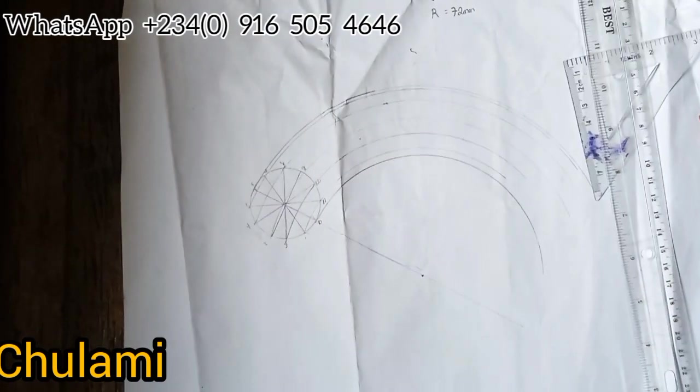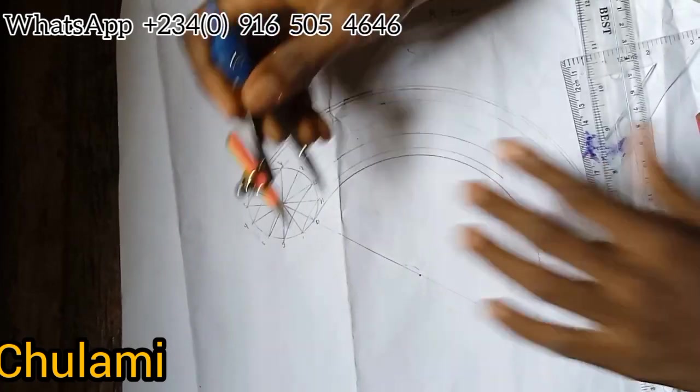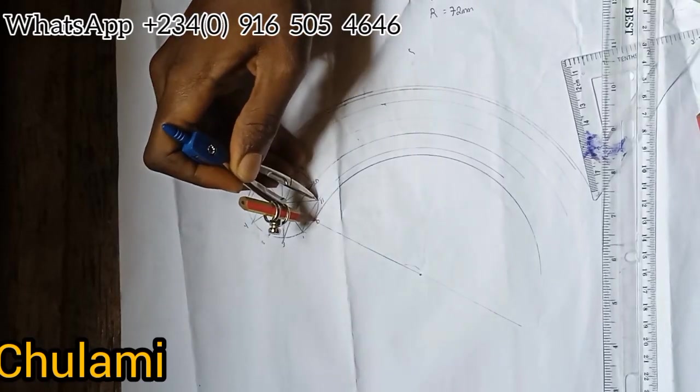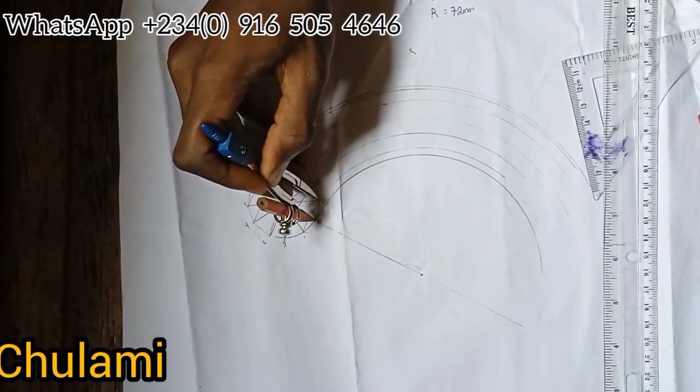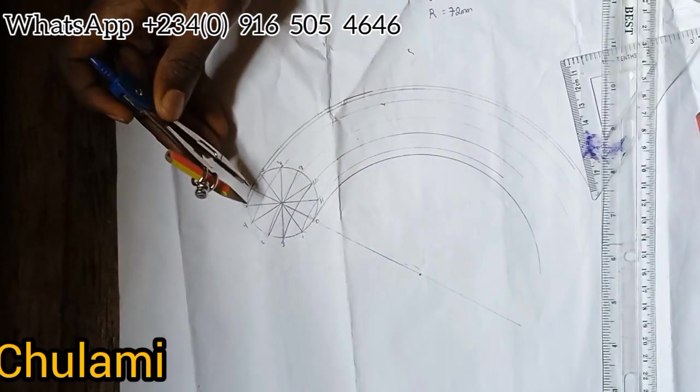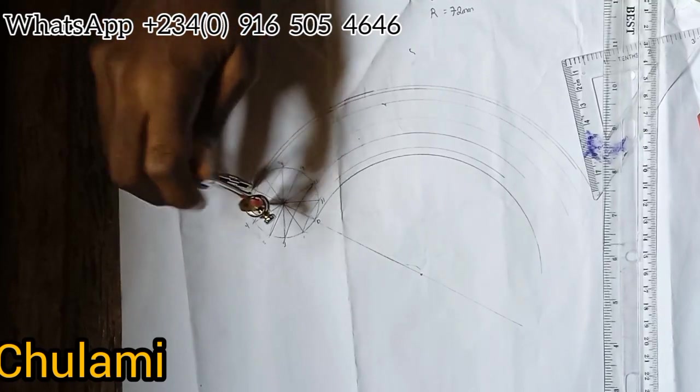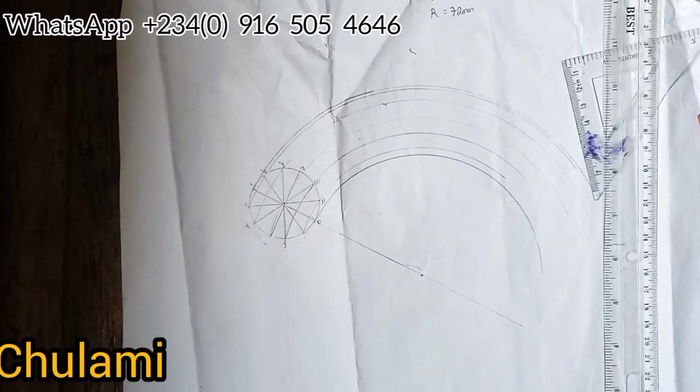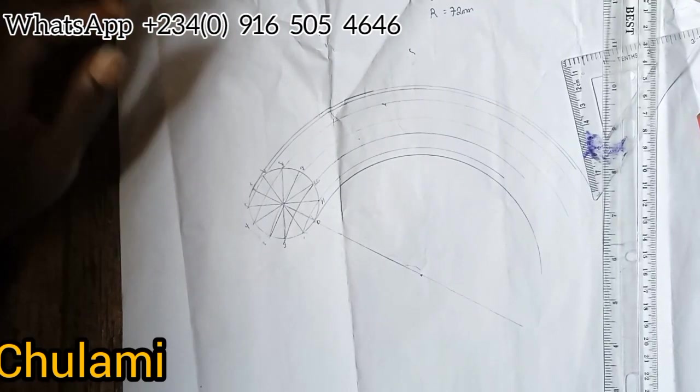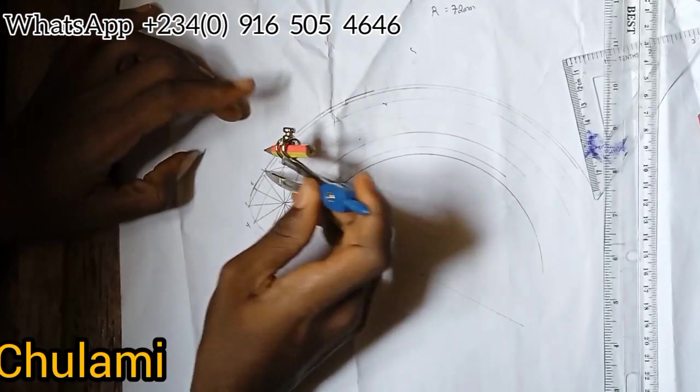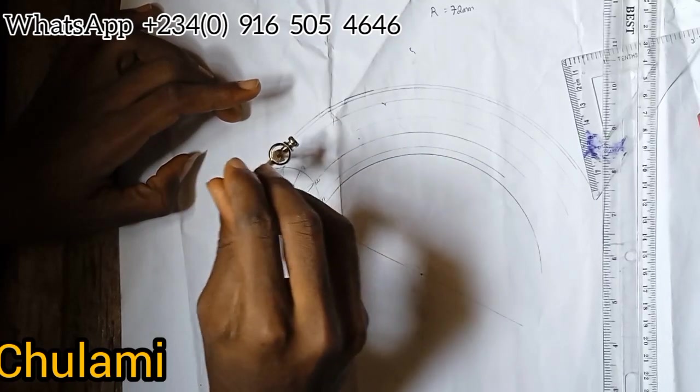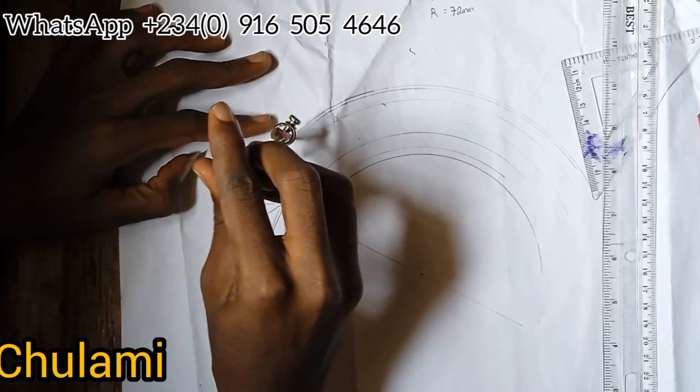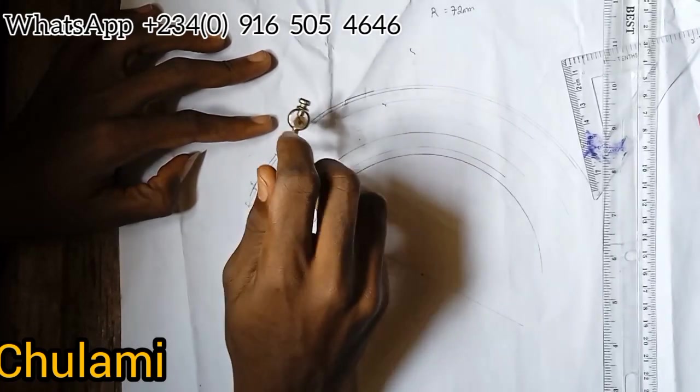After doing that, I will take my compass and measure from zero to eleven or zero to one. I'll start from six and then I'll be cutting an arc on the first circumference, that's the biggest circumference. I will repeat this process for 12 equal divisions, so I'll be cutting till 12.